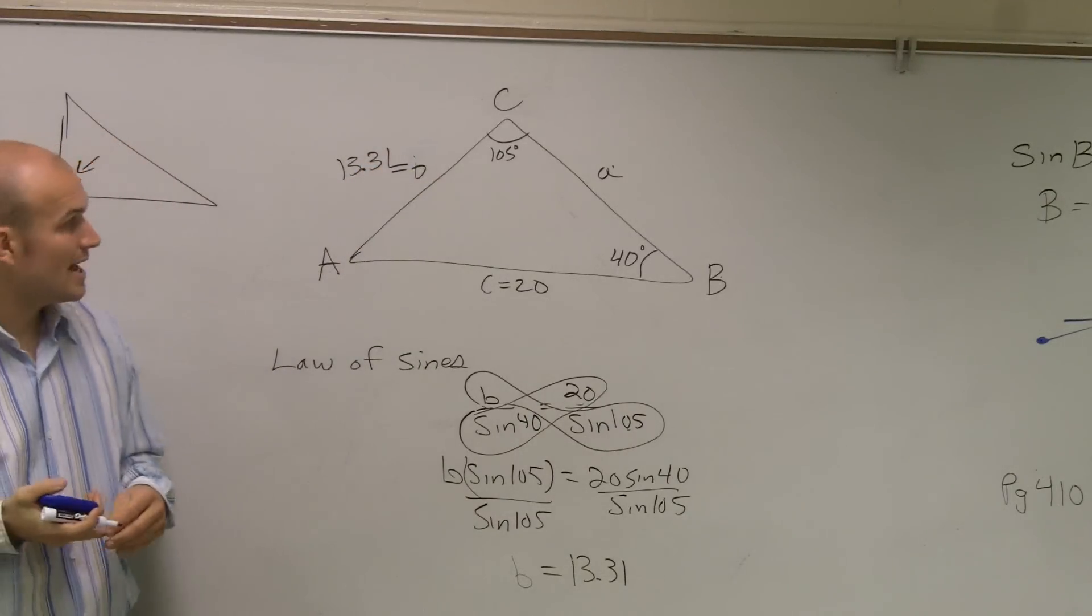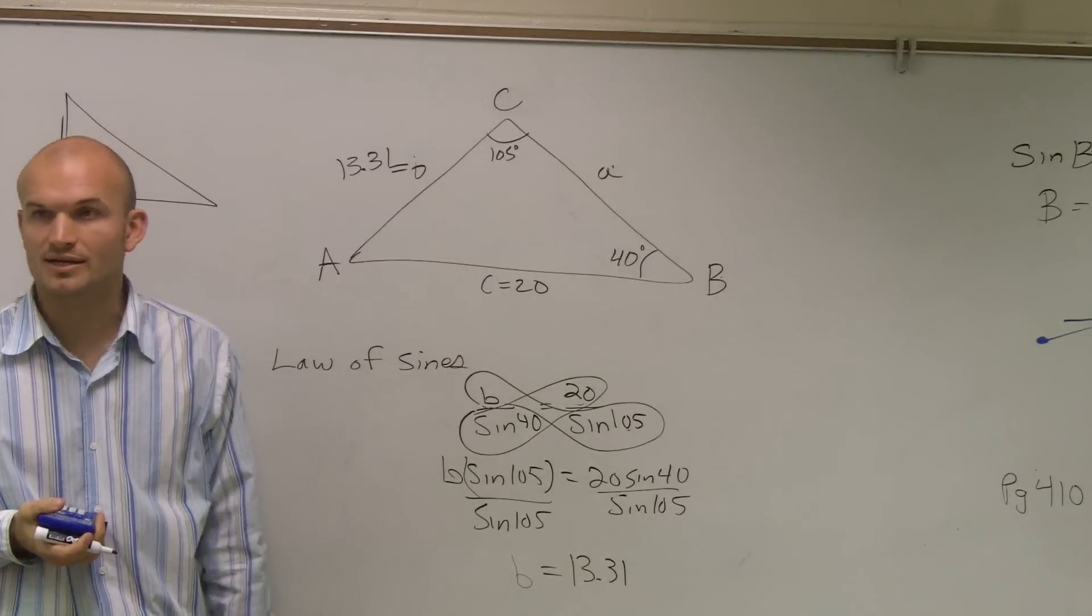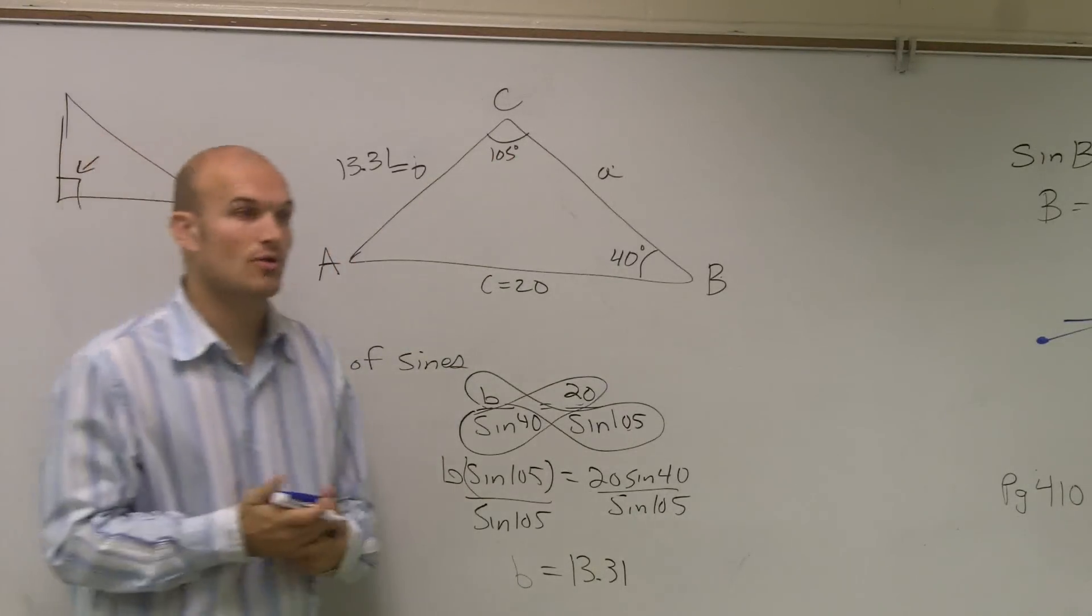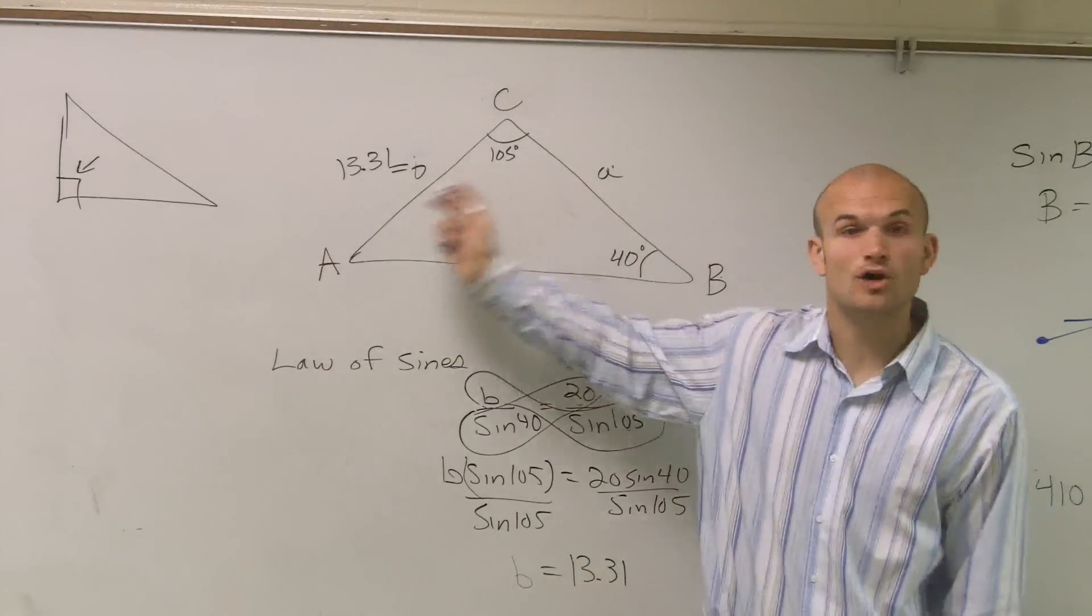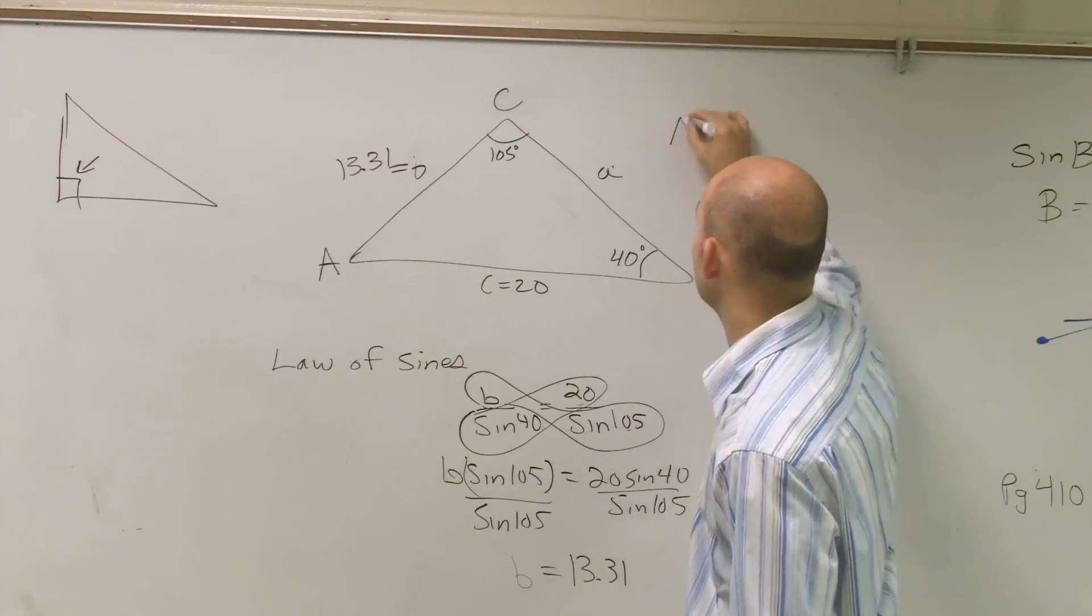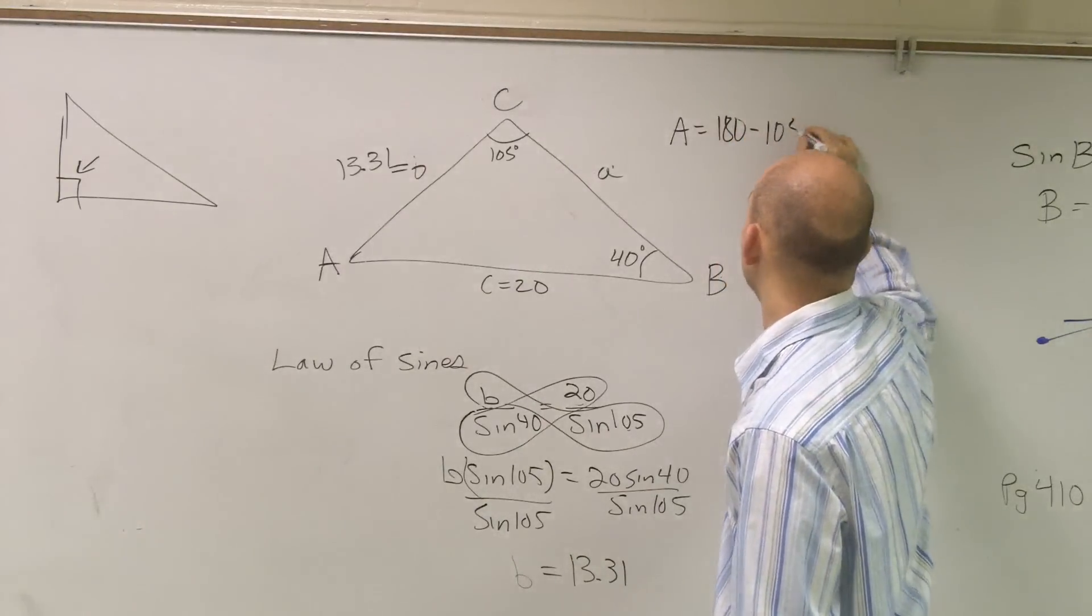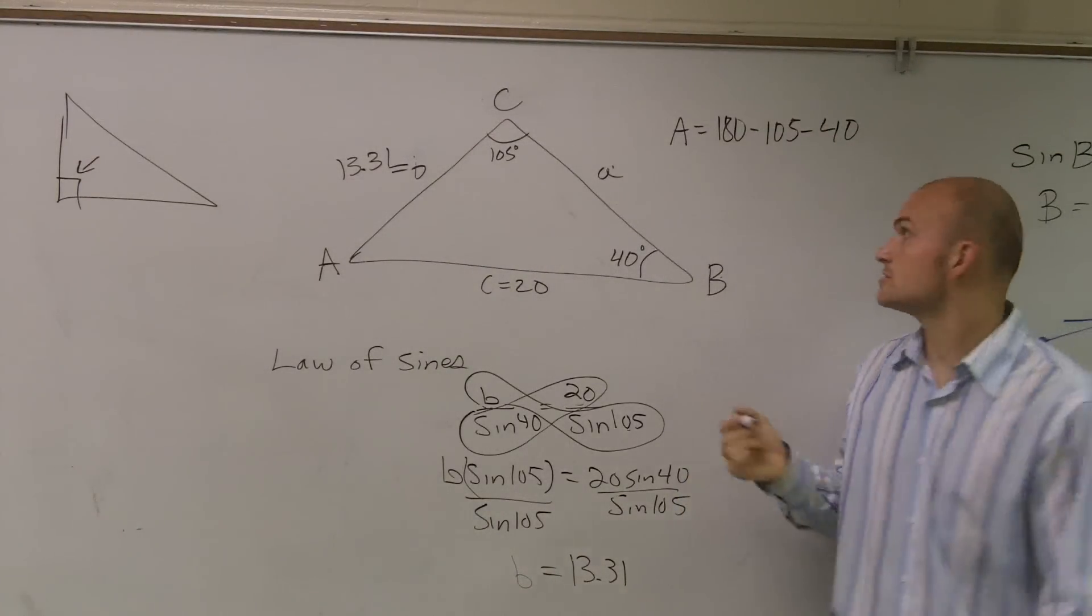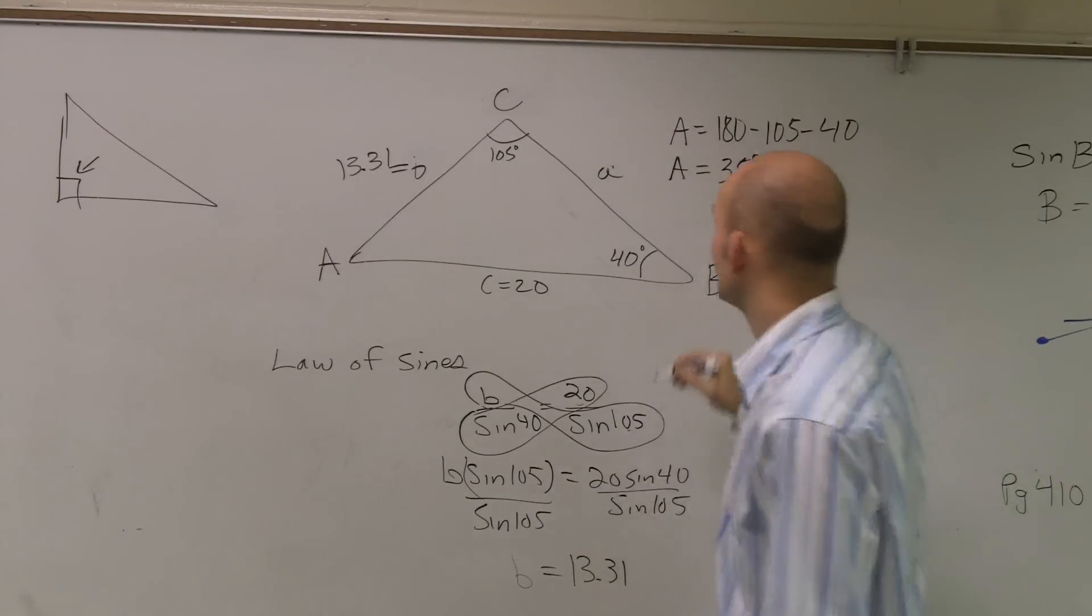So now we need to figure out what our angle A and side A are. We're kind of stuck here. We don't know what the angle is, nor do we know what the side length is. Well, going back to our geometry days, we can remember that all the angles in a triangle add up to 180. So I can write A equals 180 minus 105 minus 40. Therefore, angle A equals 35 degrees.